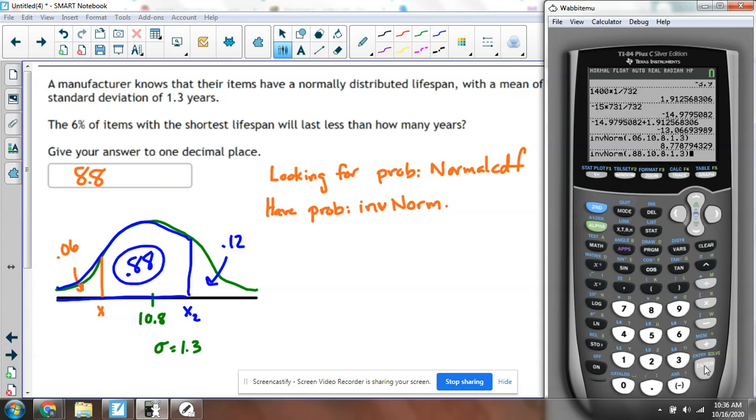Nothing else stays the same. You'll see now I get a number higher than 10.8, which makes sense. If I used 0.12, I would get a number lower than 10.8, which wouldn't make sense. So this number here would be 12.